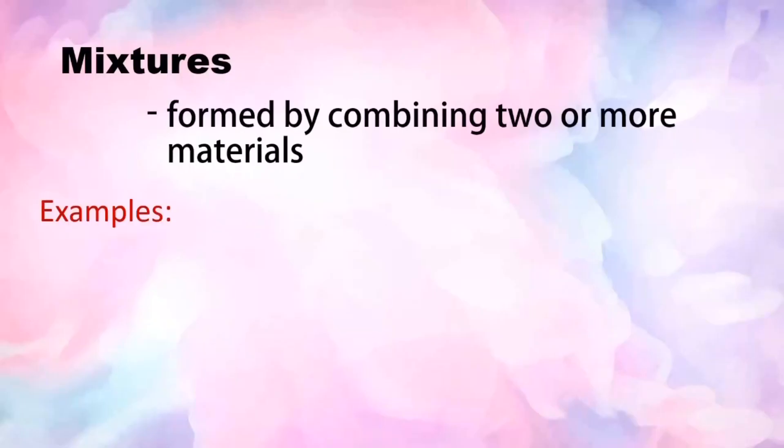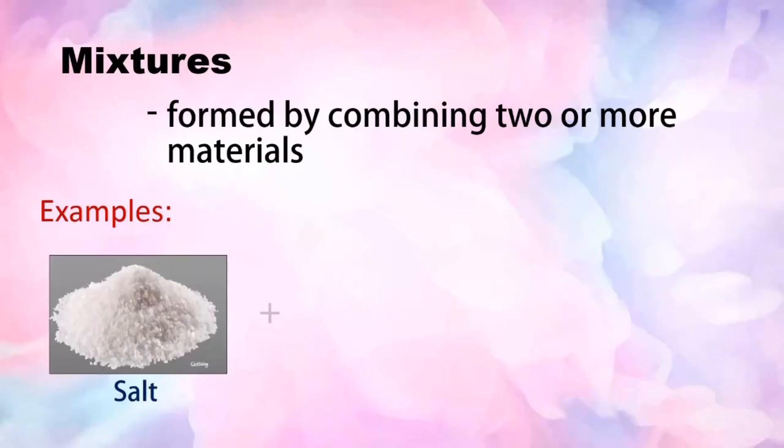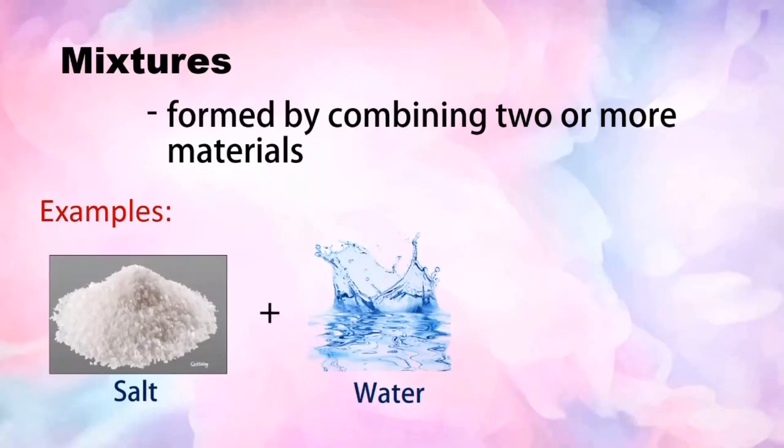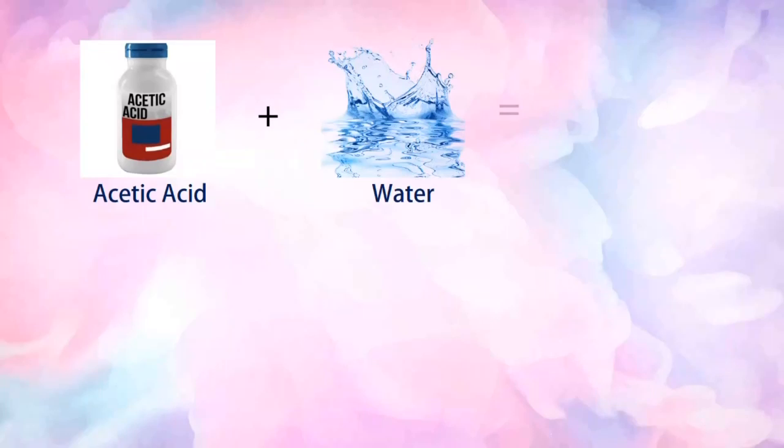Mixtures are formed by combining two or more materials. Here are the examples of mixtures. 1. Salt and water are the compositions of sea water. 2. Acetic acid mixed with water produces vinegar.